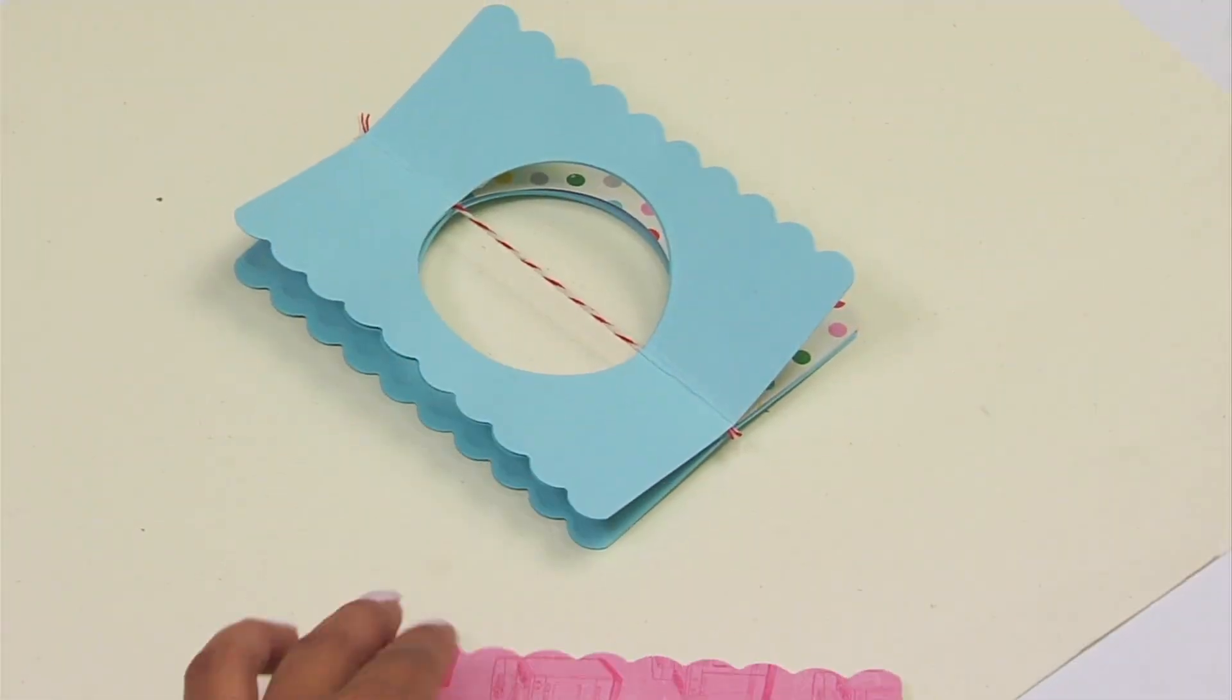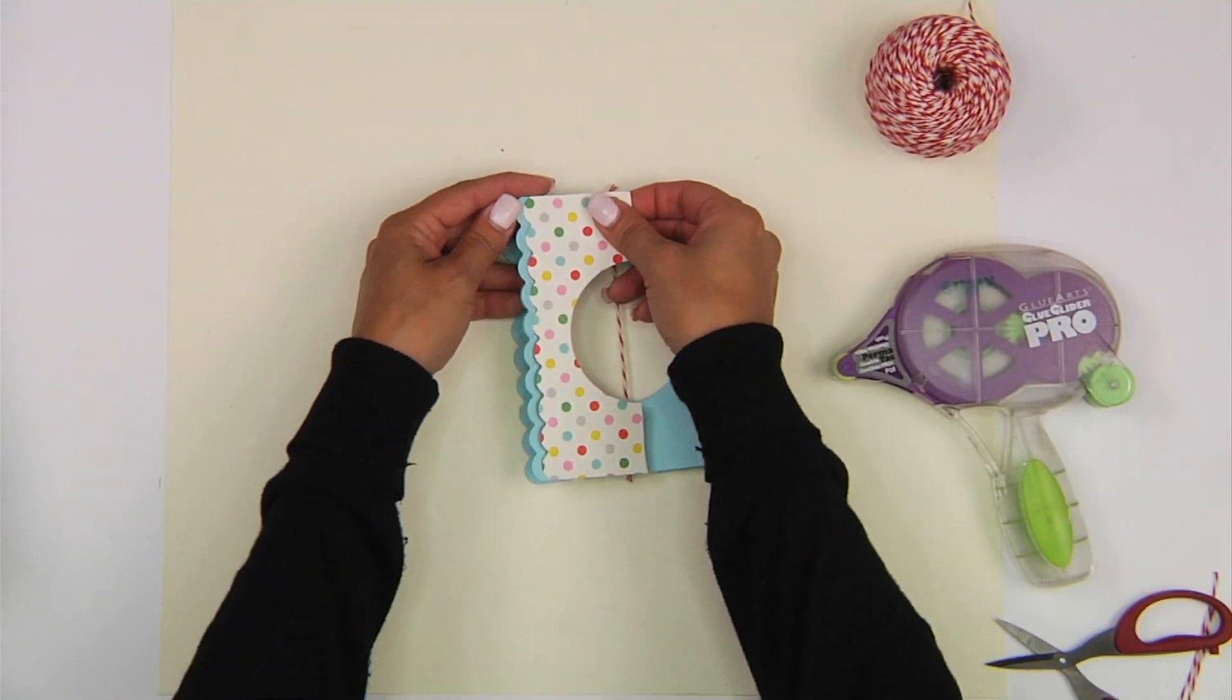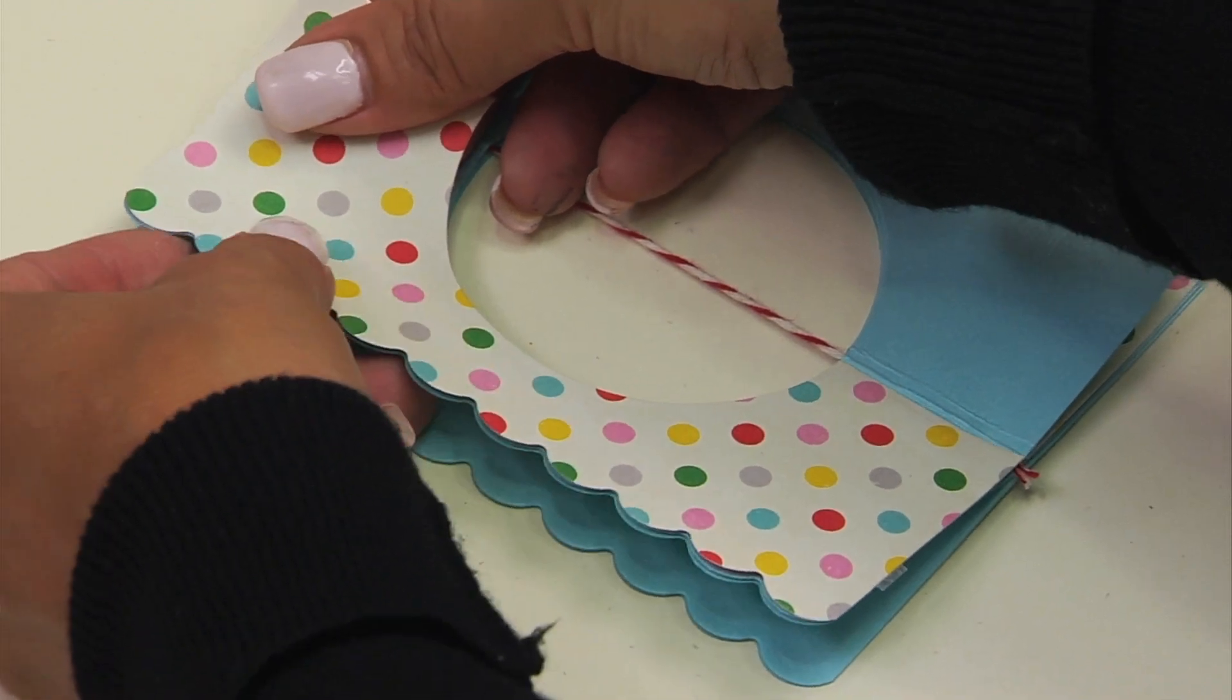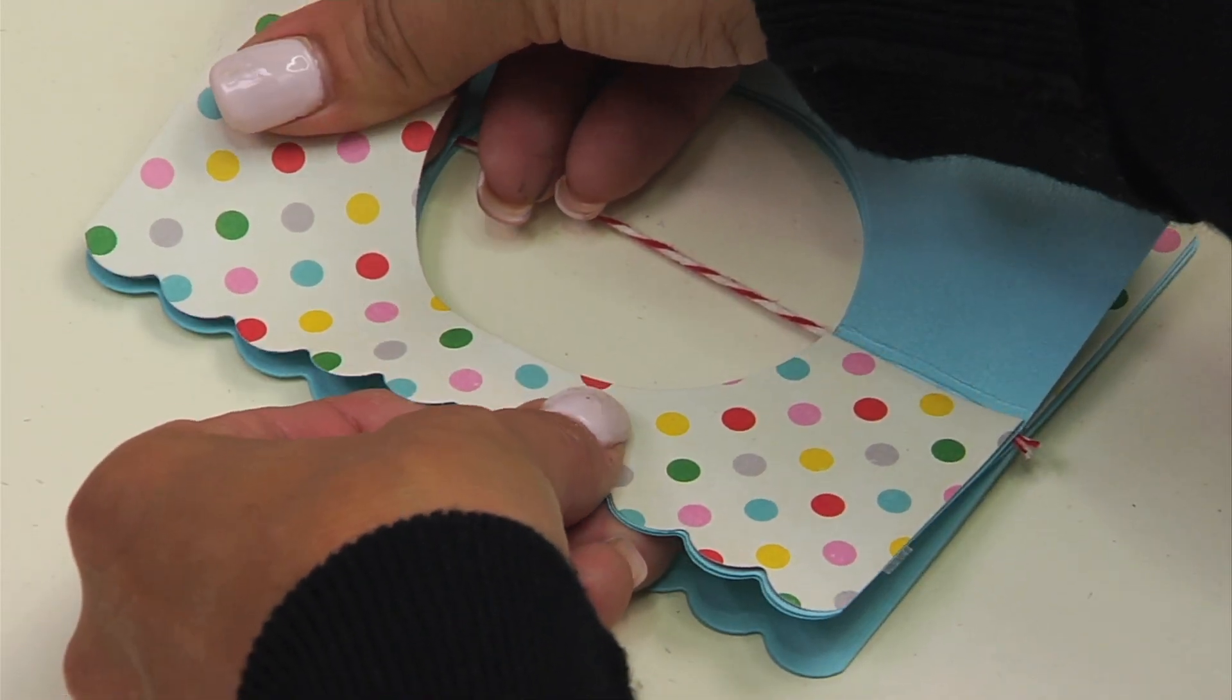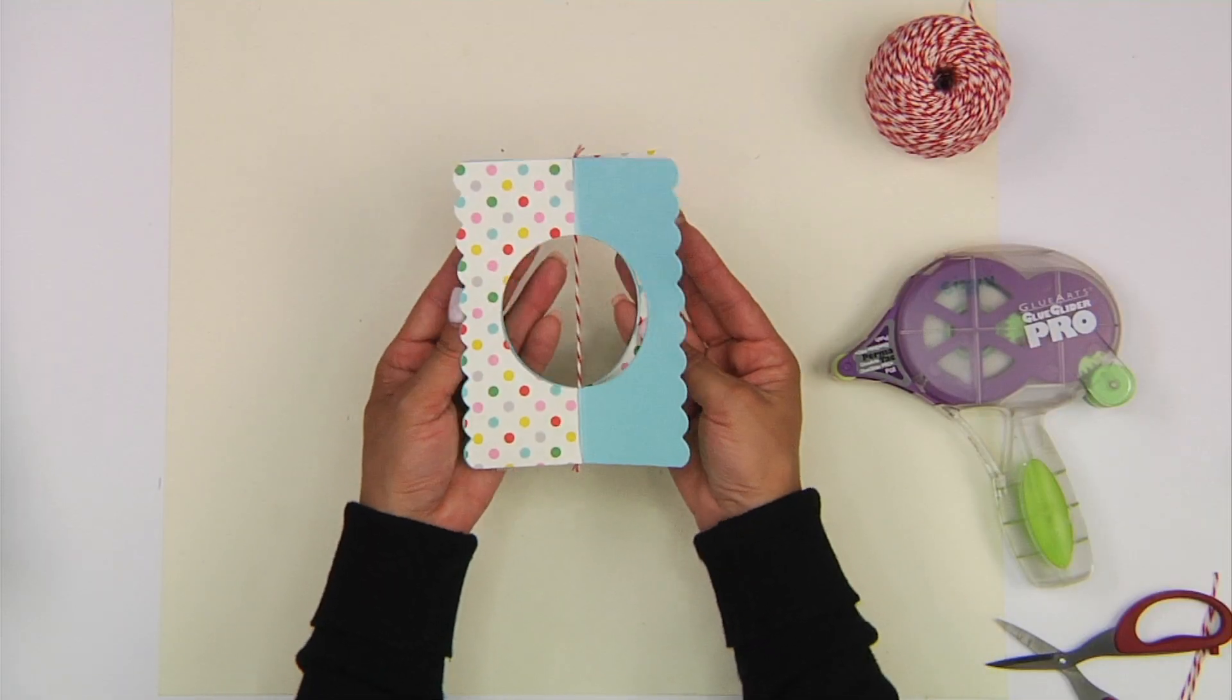Now we're going to adhere our final patterned paper to the front of our base, and line that along the edge. Being careful to cover the front of the base of the card. And you will have something like that.